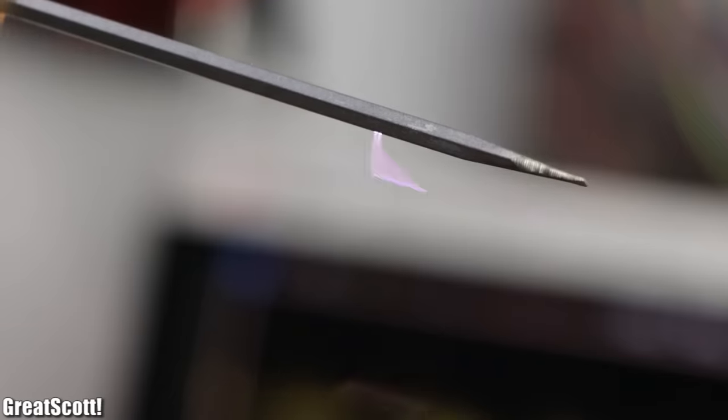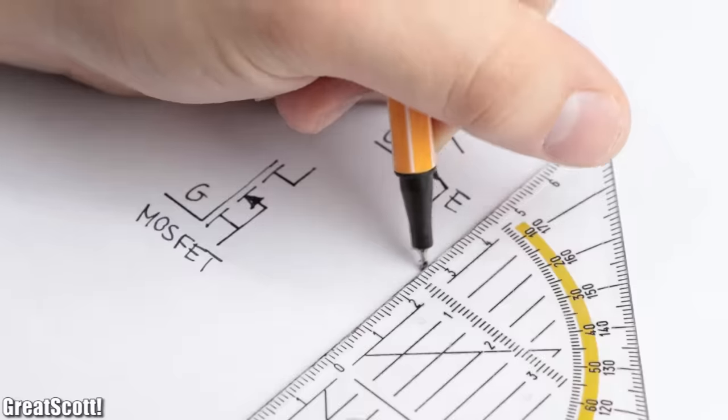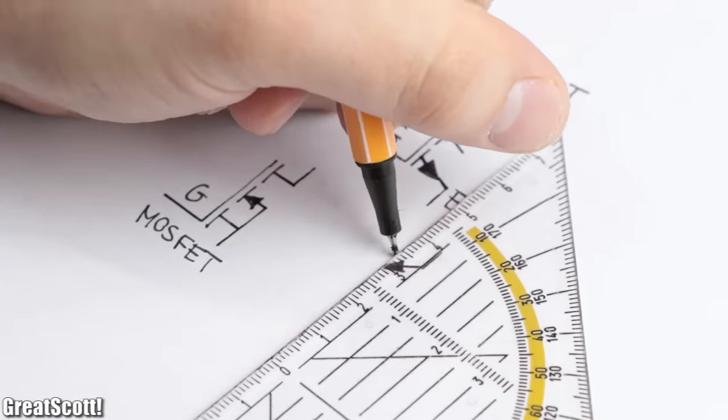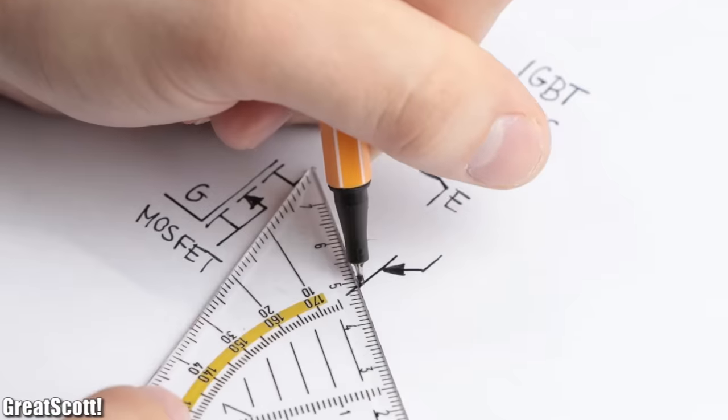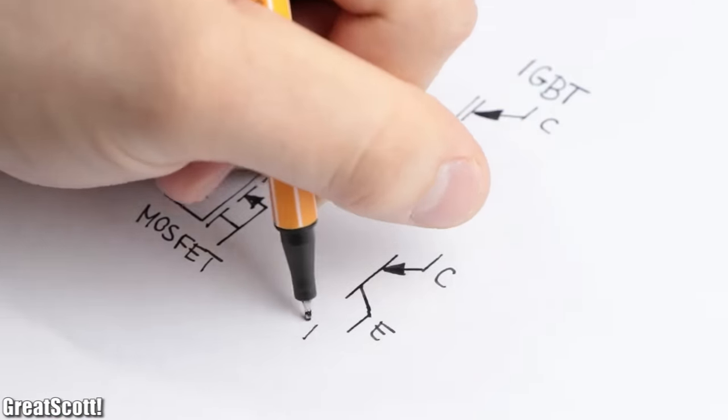So using them for a solid state Tesla coil would definitely be possible. And if you want to know more about the individual components of the IGBT, aka the BJT and the MOSFET, then don't forget to have a look at their dedicated basics videos.